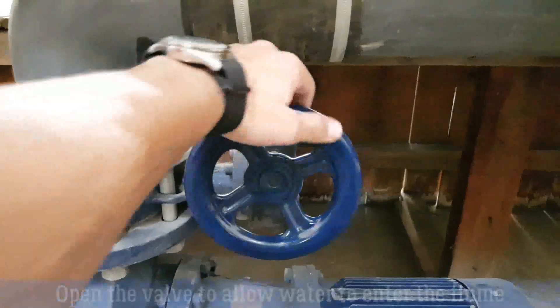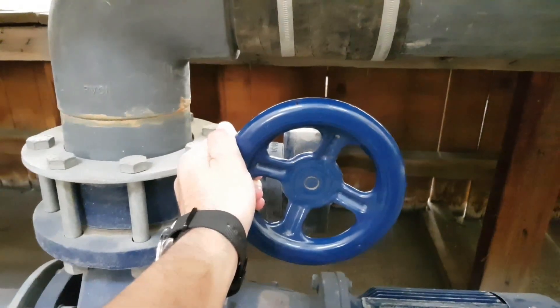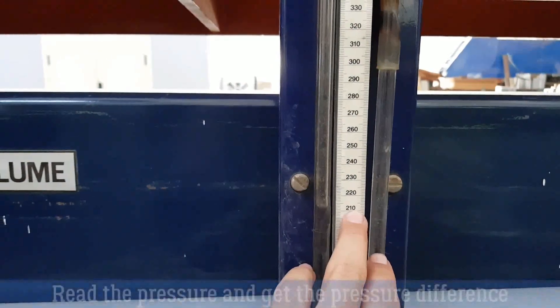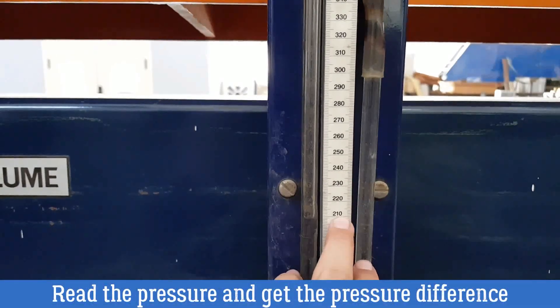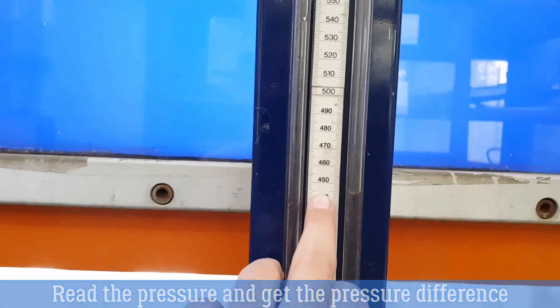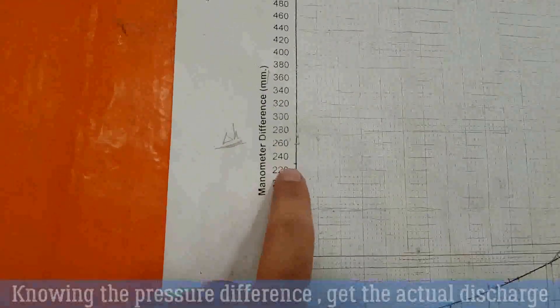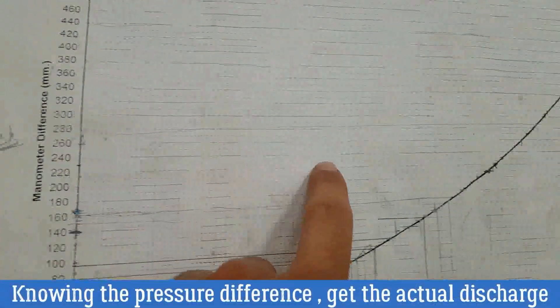Open the valve to allow water to enter the flume. Read the pressure and get the pressure difference. Then after knowing the pressure difference, get the actual discharge using this chart.